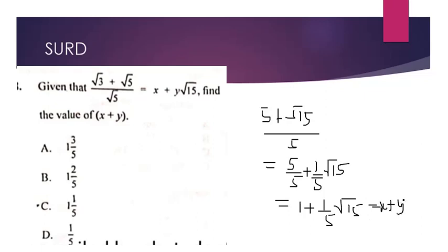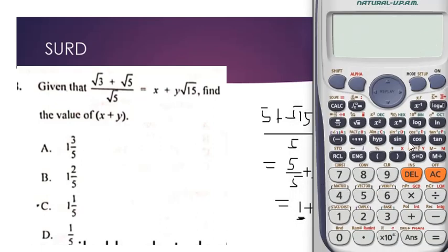We have x plus y root fifteen, so we know that x is one and y is one over five. We need to find x and y and then add them. So x is one and y is one over five. Adding x and y gives us one plus one over five, which equals six over five — the same as one whole number one over five.